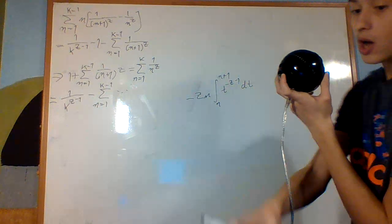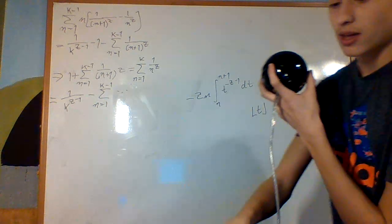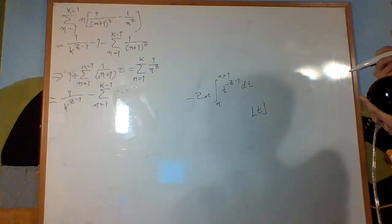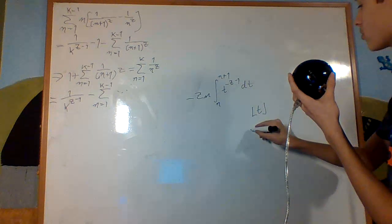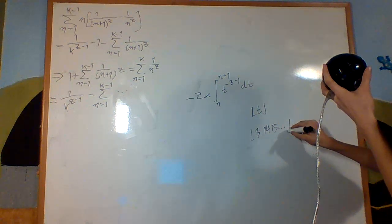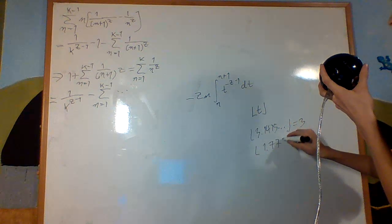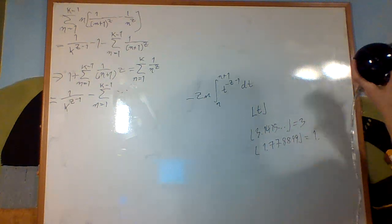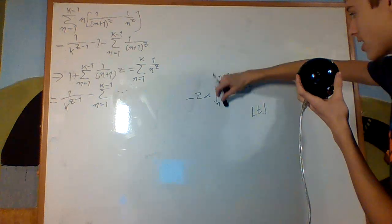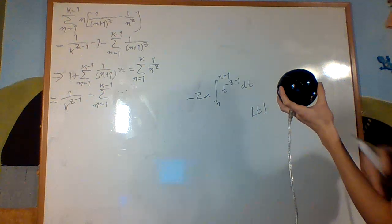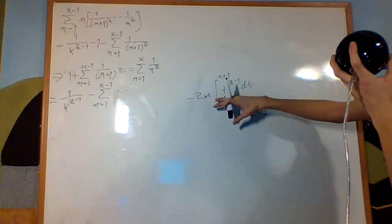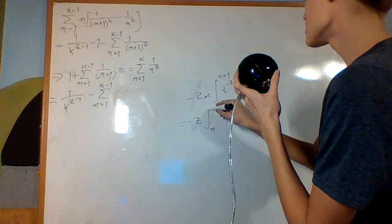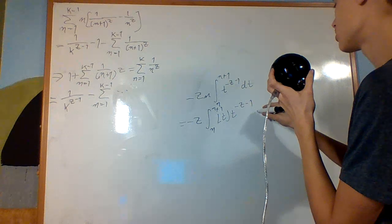What's the point of this? There's a function called the floor function of t which will help us, allowing us to move that n inside the integral. The floor function rounds down: floor(3.1415...) equals 3, and floor(1.7788...) equals 1. It's the greatest integer less than the argument, and this function is completely constant on the interval [n, n+1], constantly equal to n. So I can move it inside: negative z times the integral from n to n+1 of floor(t) times t^(-z-1) dt.